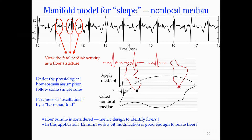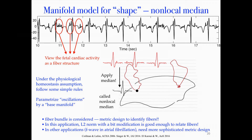There is a fundamental difficulty in determining the metric — how to decide if two beats belong to the same maternal beat. In fetal ECG, the L2-norm is good enough. However for other applications like F-wave analysis and atrial fibrillation, more sophisticated metric design is needed. The algorithm has theoretical guarantees, and we understand what is really happening by applying this manifold model.